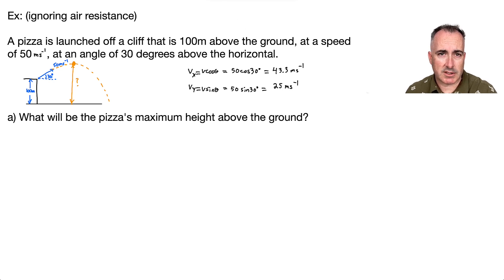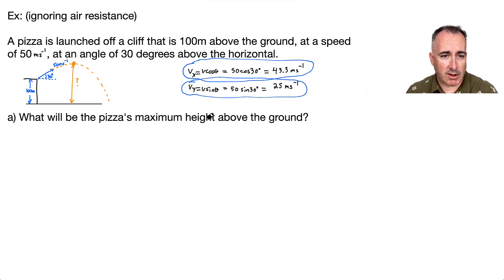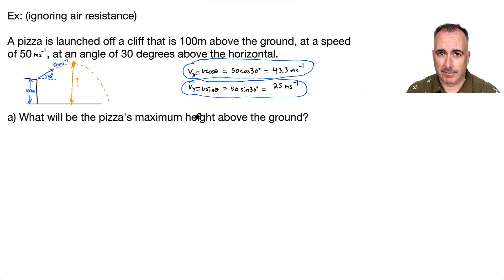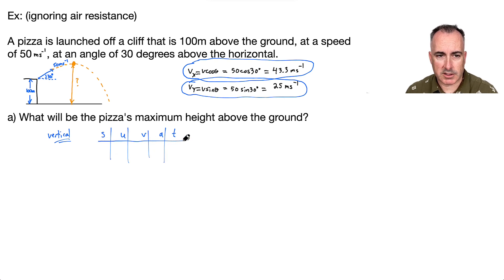Now we have Vx and Vy — those are going to be important. For maximum height above the ground, I'm going to consider the y-component — the vertical — where it does accelerate. That means I'm going to need SUVAT, and I'll put little subscript Y's everywhere: Sy, Uy, Vy, Ay. T doesn't need a subscript — it's just time.